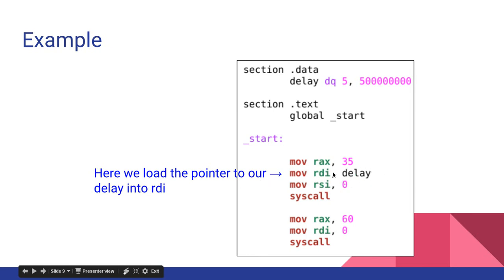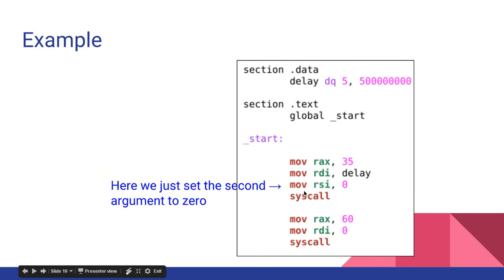We just load the memory address of the delay into RDI. And here we just set the second argument to zero. And finally, we call it.